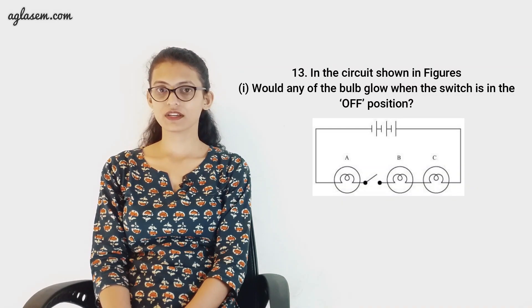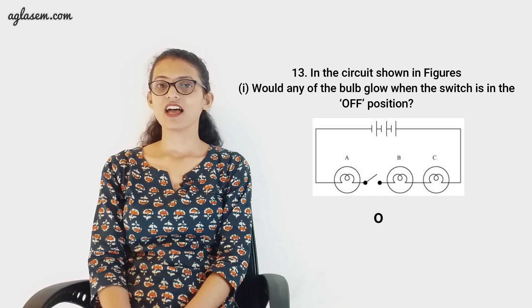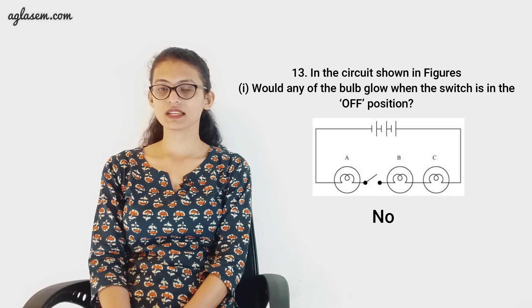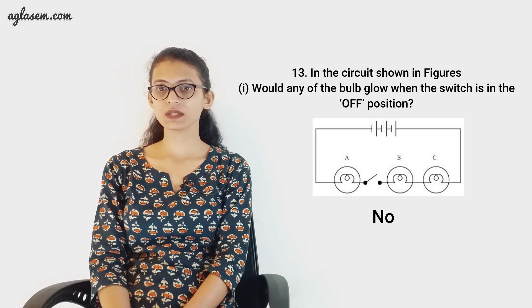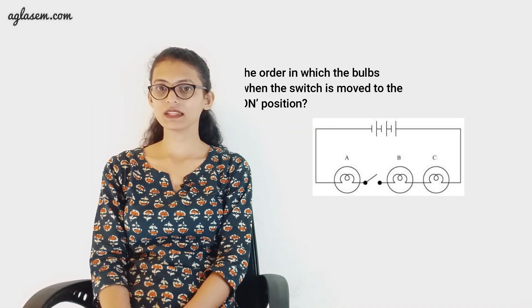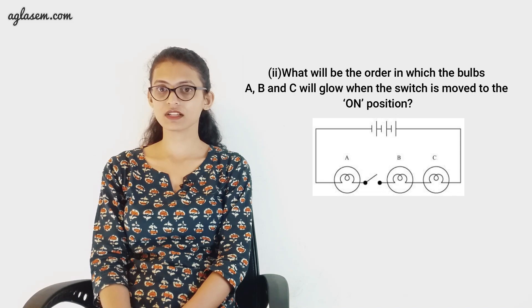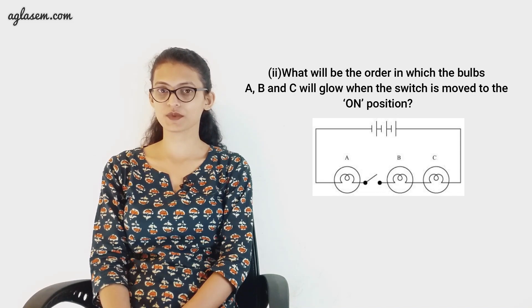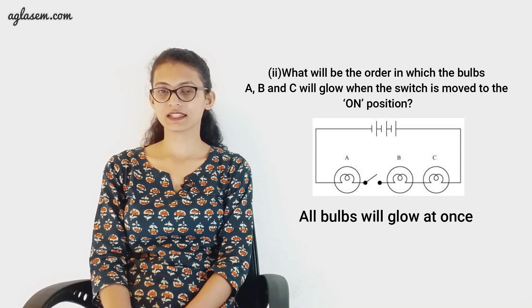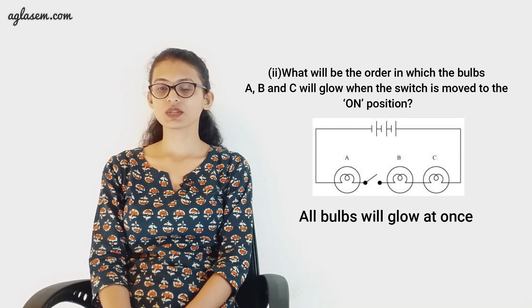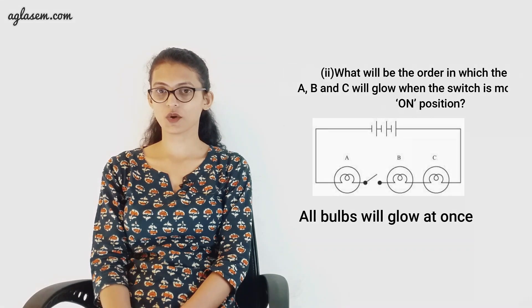Our last question is question thirteen: in the circuit shown in the figure, would any of the bulbs glow when the switch is in the OFF position? No, none of the bulbs will glow when the switch is in the OFF position, as current must flow for the bulb to glow. The next part asks: what will be the order in which bulbs A, B, and C will glow when the switch is moved to the ON position? They will all glow at the same time because they are all connected to the same battery and switch.